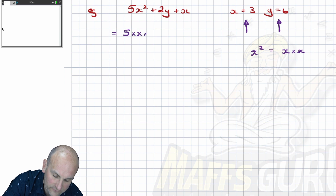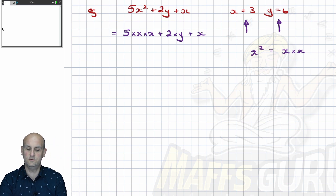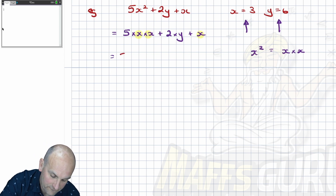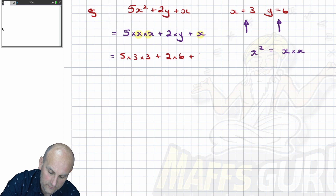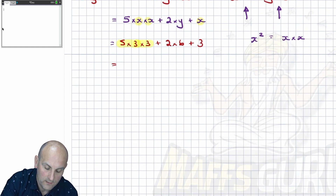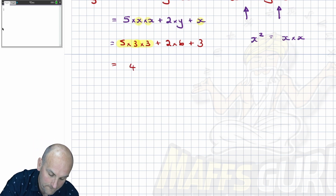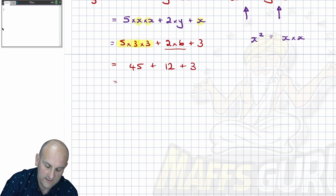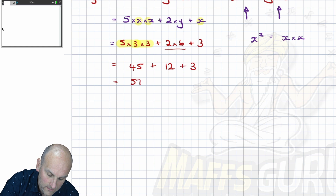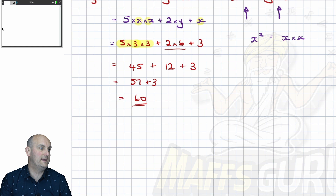We've met in the previous video what that floaty number means — x squared is the same as x multiplied by x. At this point I'd absolutely suggest writing it out in expanded form so you don't make a mistake. So I'm going to write that as 5 times x times x plus 2 times y plus x. Now I substitute — everywhere I see x I write 3, so I have 5 times 3 times 3 plus 2 times 6 plus 3. Following BIDMAS through, doing multiplication first: 5 times 3 is 15, times 3 is 45. 2 times 6 is 12. Then 45 plus 12 is 57, plus 3 gives me my evaluated answer of 60!